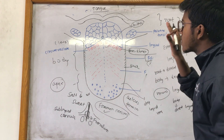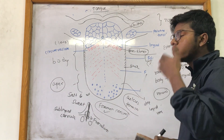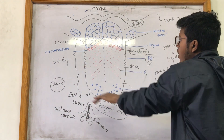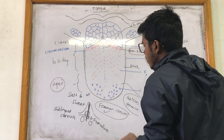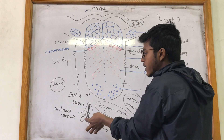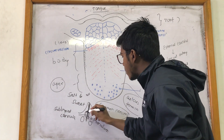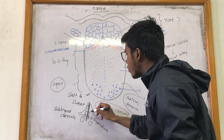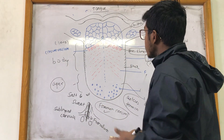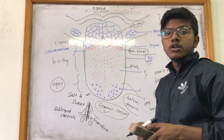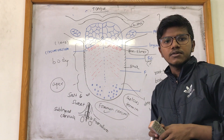In summary, the tongue has two surfaces — dorsal and ventral. All the papilla structures are on the dorsal surface, while the ventral surface has the frenulum, sublingual caruncles, and submandibular caruncles. The deep lingual veins are also visible on the ventral surface. That concludes this overview of the human tongue. Please like and subscribe. Thank you.